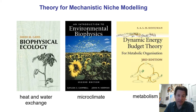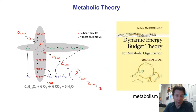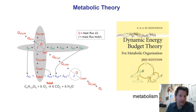As mentioned in the first part of this series on mechanistic niche modelling, the theory I'm using for the energy budget is dynamic energy budget theory — a metabolic theory that gives us access to equations relating to mass exchange and energy exchange. These equations describe the process of taking up food from the environment and using that to build the body, develop, grow, and reproduce.